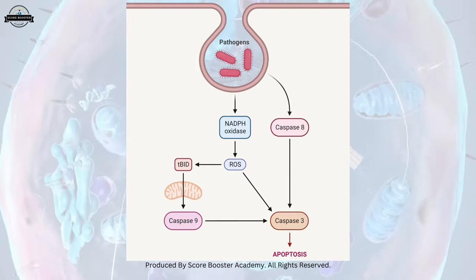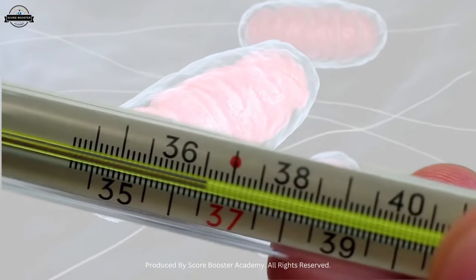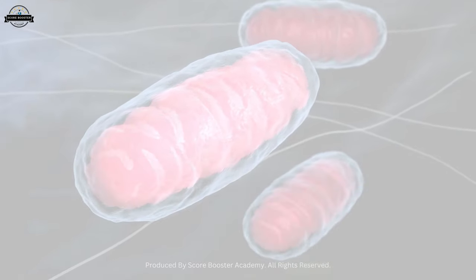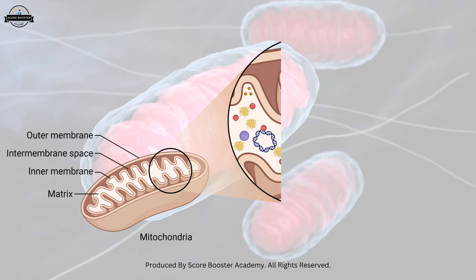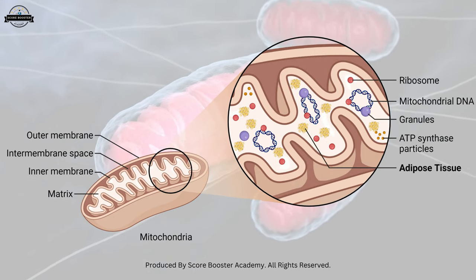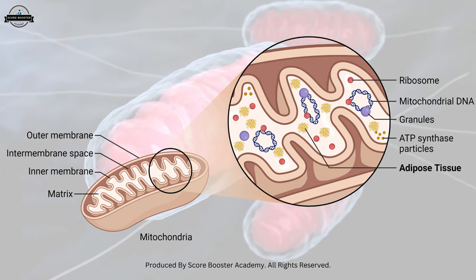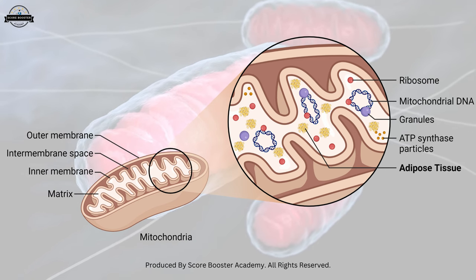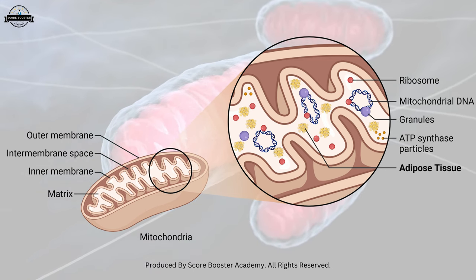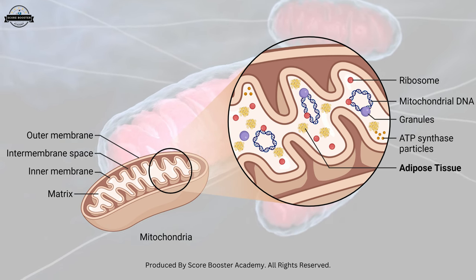In certain cells, mitochondria generate heat to help maintain body temperature. Brown adipose tissue, abundant in mitochondria, is responsible for this thermogenesis.